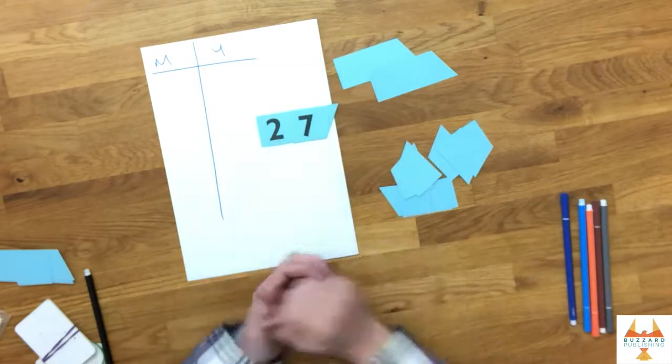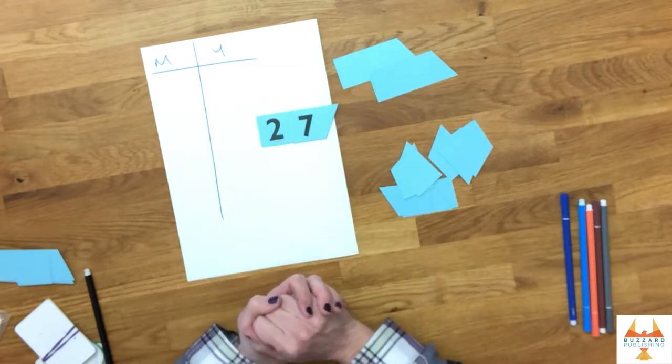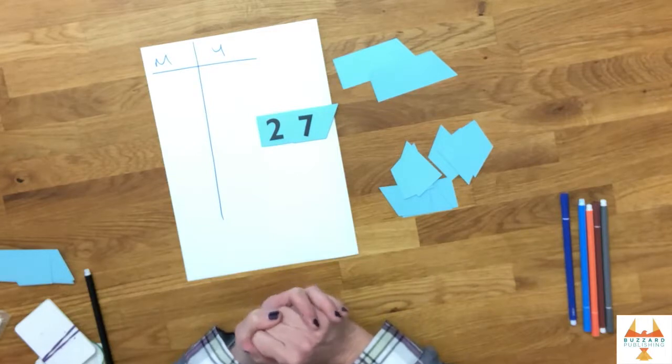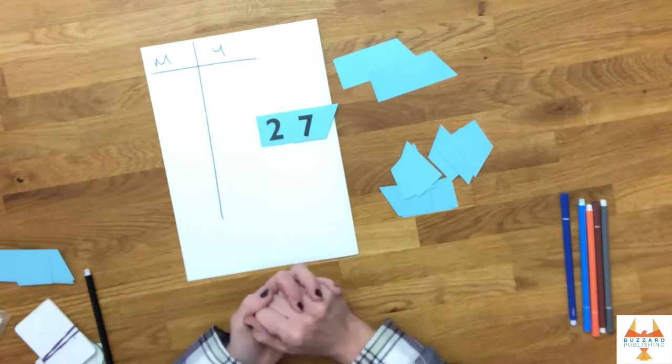I've made the number 27. I know that 27 divided by three is nine because nine threes are 27, so there's no remainder. So I actually score nothing for that go.